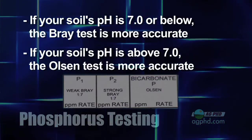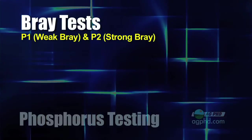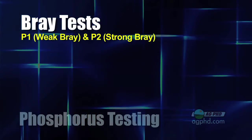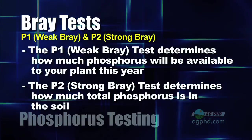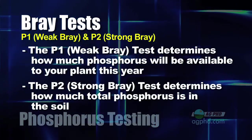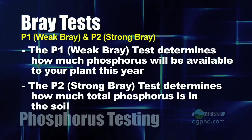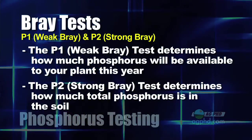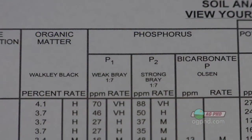For low pH soils there are two Bray tests that show up: P1, which is a weak Bray test, and P2, which is a strong Bray test. The weak Bray test indicates what phosphorus will be available to your crop this year, while the strong Bray test measures total phosphorus in the soil. Whether you're using Bray or Olsen, one of the most important things is understanding what those numbers really mean.